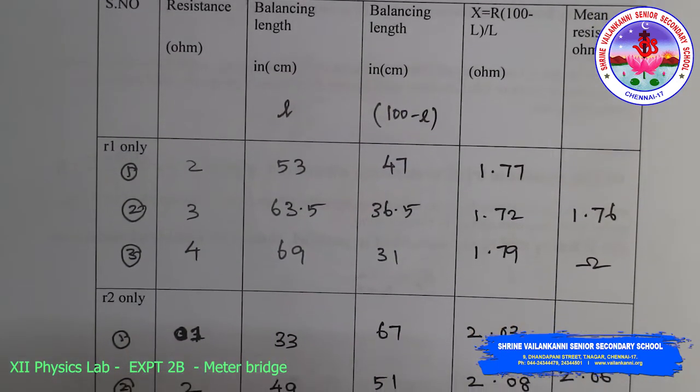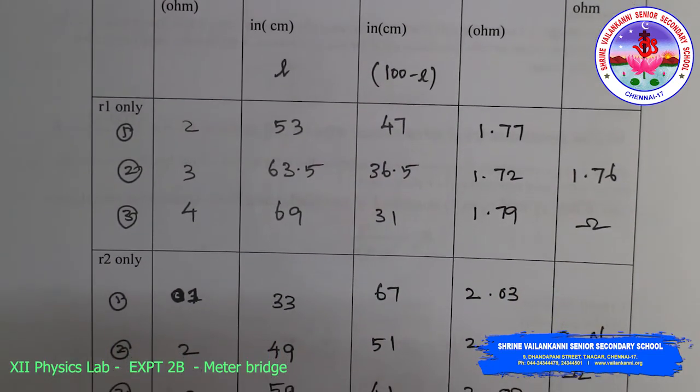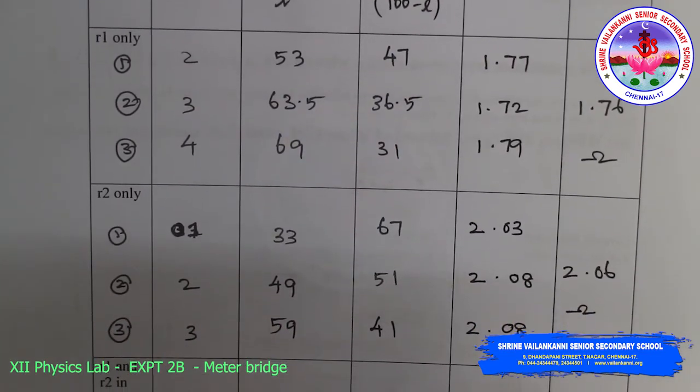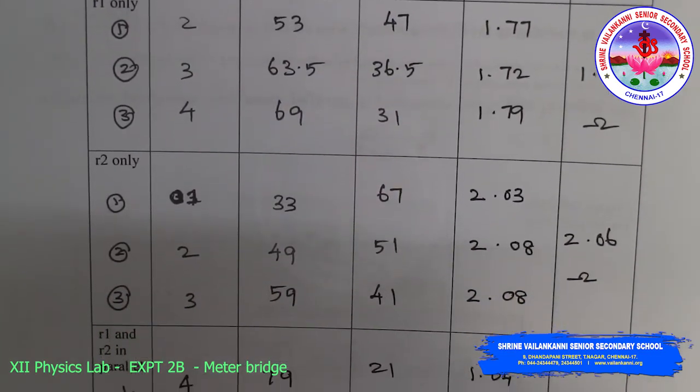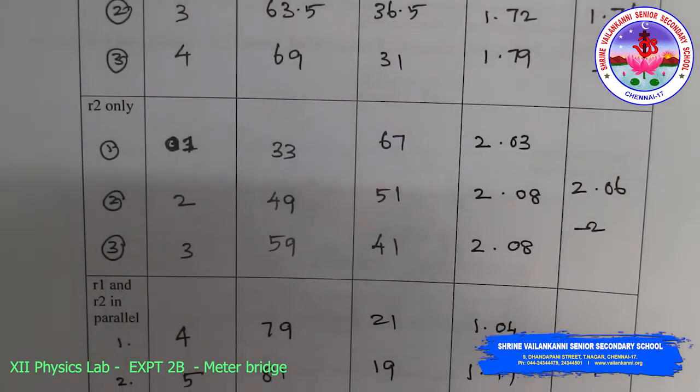The mean resistance for R1 is 1.76. Mean resistance for R2 is 2.06. For parallel value, we got practically 1.16, 1.11 ohms.